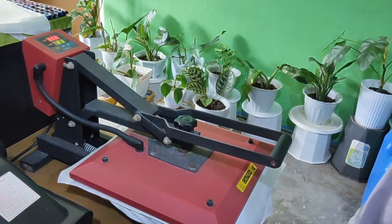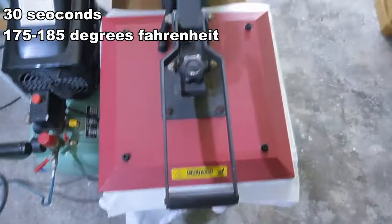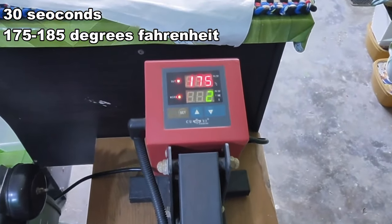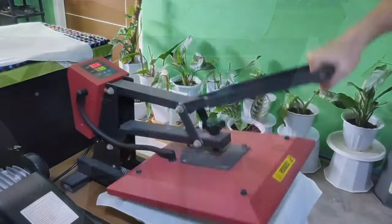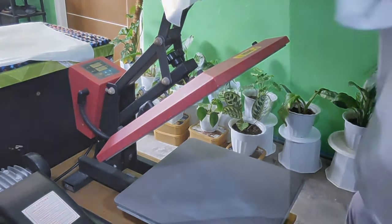If you have the machine, set it at 30 seconds at around 175 to 185 degrees. If you are using an iron, set it to the hottest temperature and put a little more weight while ironing your shirt till you see the surface is flat or smooth.